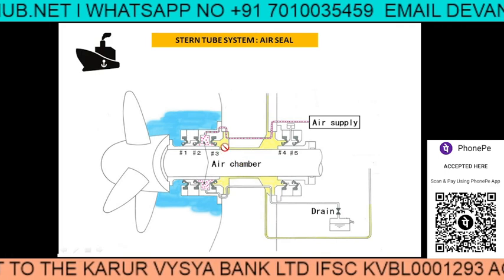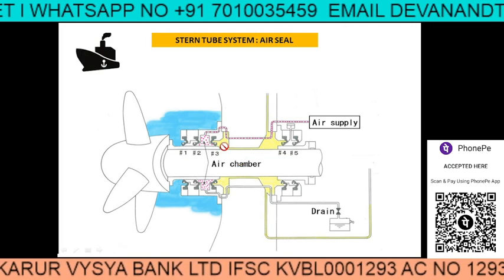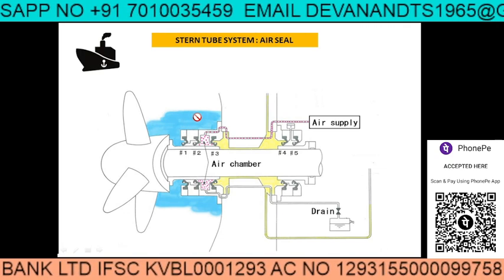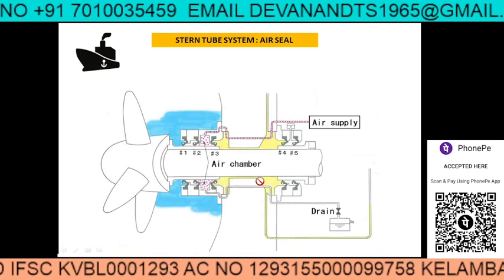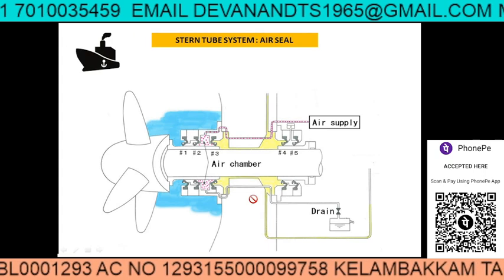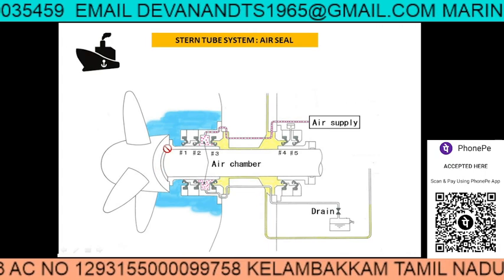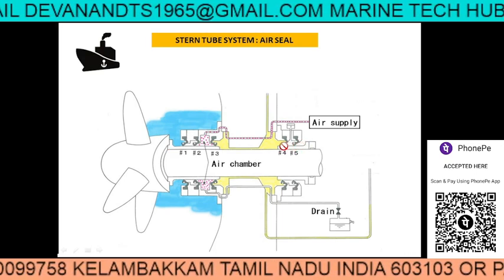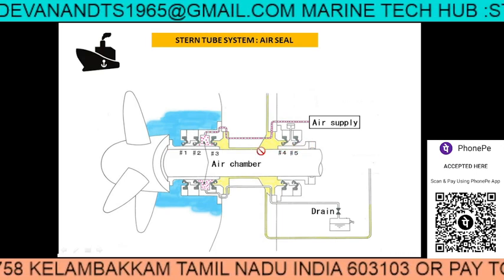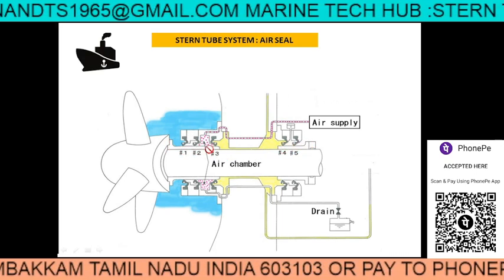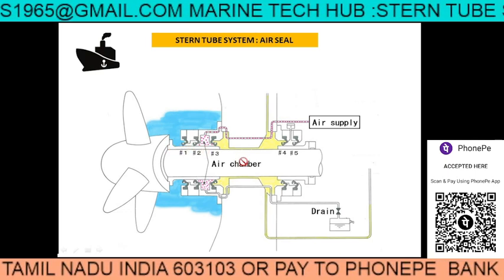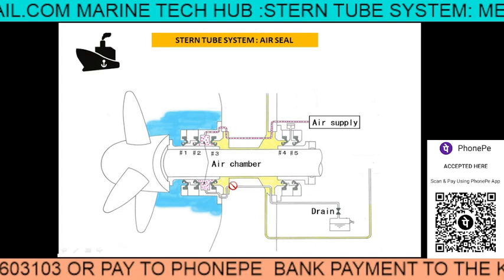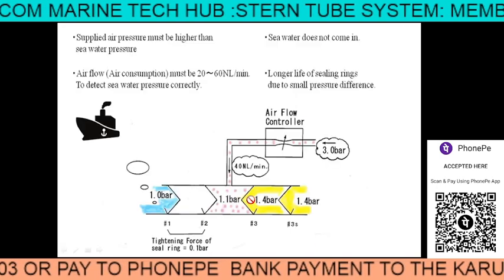Nowadays we are using bio oil, so if oil leaks outside it is not harmful to the sea. This is one part of the stern tube system. You can see this is the liner here, and one more liner here. This is the stern tube liner, and from this picture you will understand how the system is.